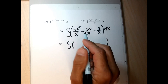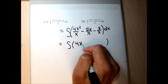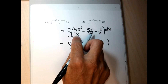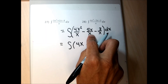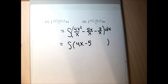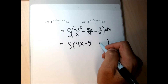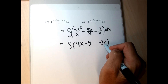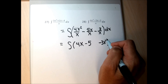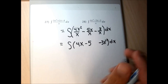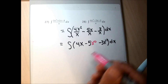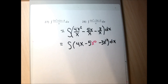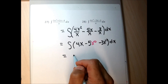After splitting the fraction: the first term's x's cancel, leaving 4x. The middle term's x's cancel, leaving minus 5. For the last term, nothing cancels, so I bring the x up to the numerator with a negative exponent — x to the negative 1. I also insert x to the zero for the constant term to make integration easier. Now I drop the integral symbol and integrate each term.